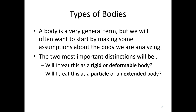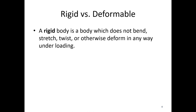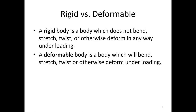So rigid versus deformable. A rigid body is a body which does not bend, stretch, twist, or otherwise deform in any way under loading — it's completely rigid. A deformable body, on the other hand, will bend, stretch, twist, or otherwise deform under loading.